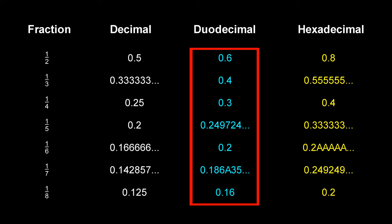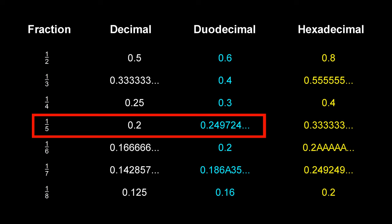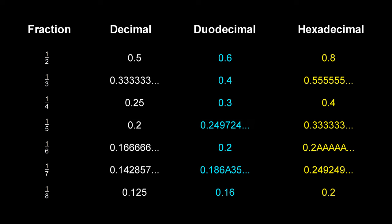However in duodecimal, a half, third, quarter and sixth are all nice round numbers — this would make basic maths a lot easier. The only fraction that is round in decimal but not in duodecimal is a fifth. However a third, a quarter and a sixth are all more common fractions than a fifth. The only reason why we think of 5 as a round number is because it is half of 10 which we use as our base. 6 is actually more useful because it can be divided into 2 and 3, which 5 cannot.